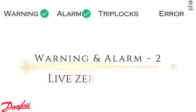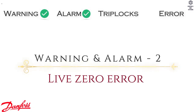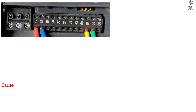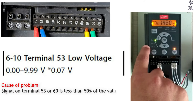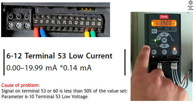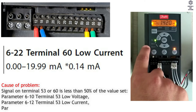Warning and Alarm 2: The Zero Error. Cause of Problem — signal on Terminal 53 or 60 is less than 50% of the value set. Parameter 6, Terminal 53 Low Voltage. Parameter 612, Terminal 53 Low Current. Parameter 622, Terminal 54 Low Current.